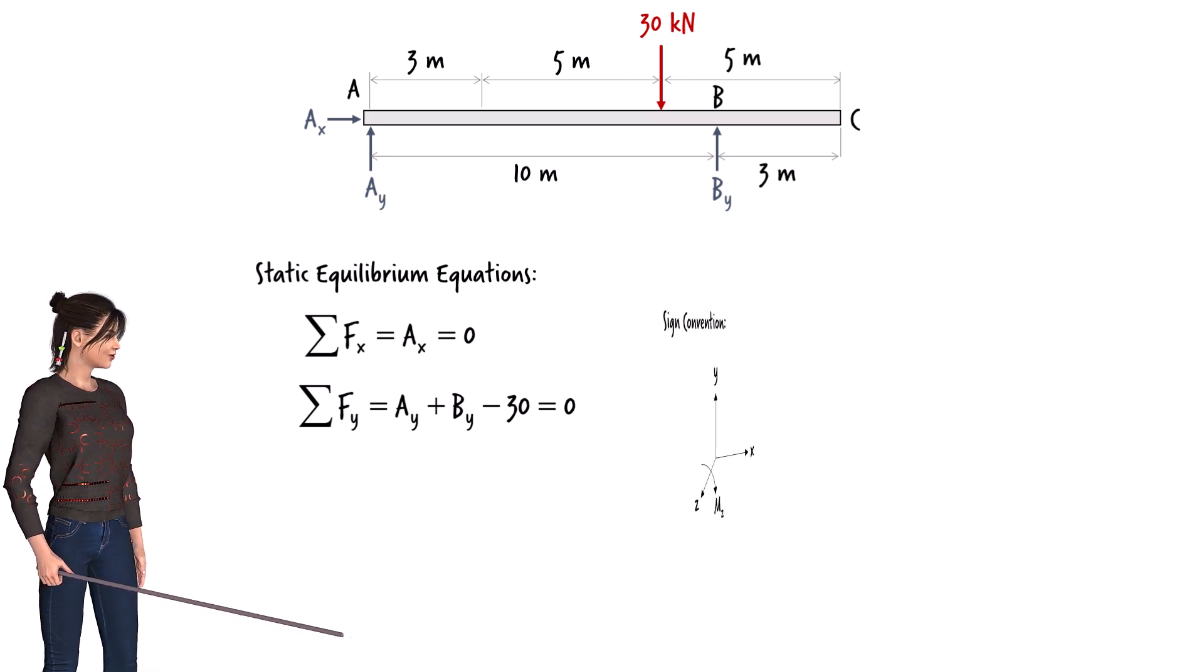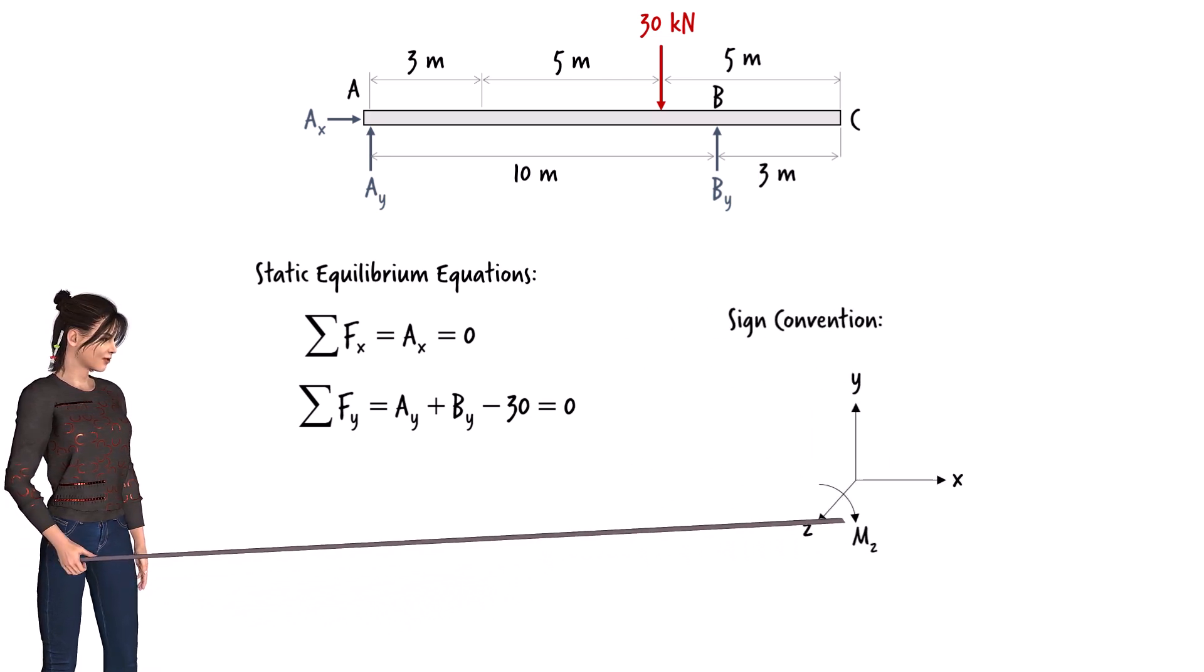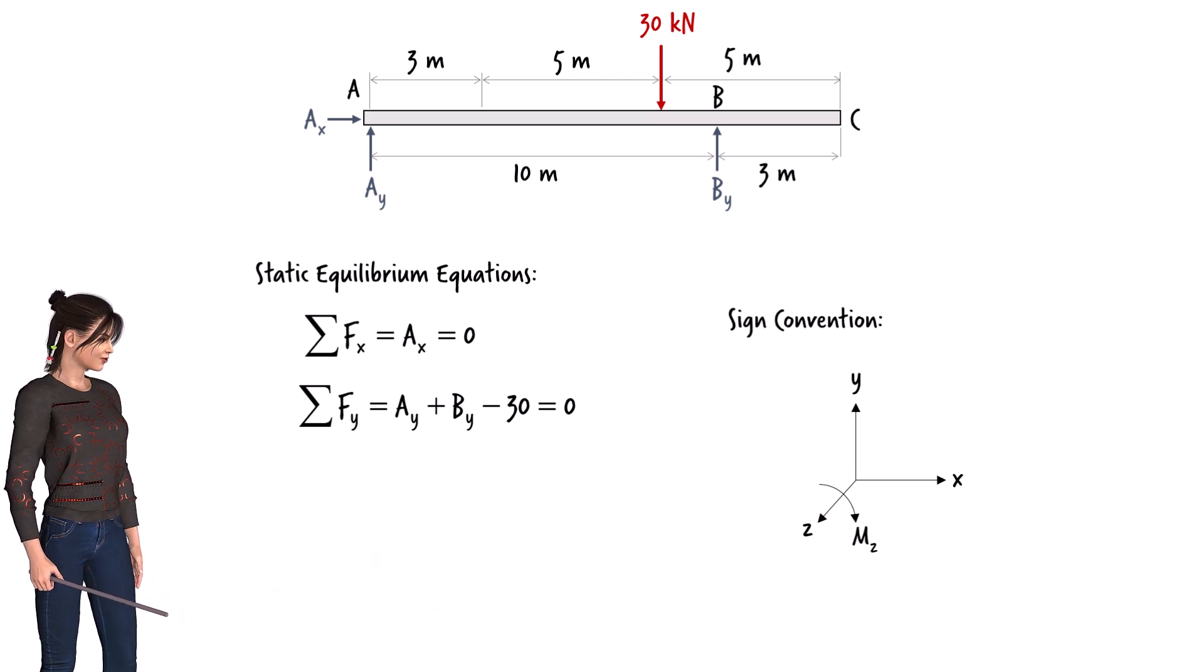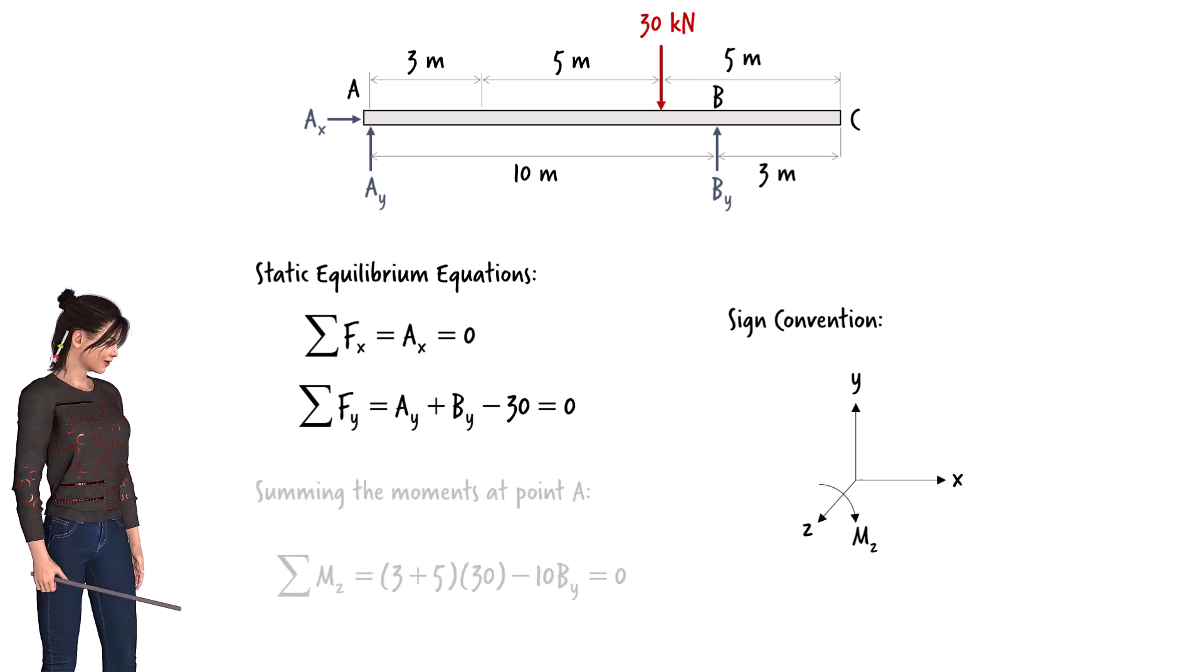Since we have assumed the clockwise direction for bending moment is positive, writing the moment equilibrium equation about point A we get the moment balance.